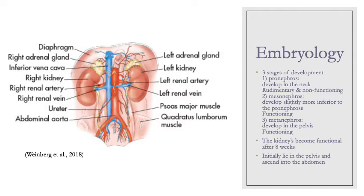After the pronephros develops in that early fourth week, at the end of the fourth week we get the development of the mesonephros, which develops slightly inferior to the pronephros. The mesonephros actually starts to create and excrete urine, functioning from about the end of week four until about week 10 when the adult kidneys take over. The pronephric duct now becomes the mesonephric duct, running from the mesonephros down to the cloaca. It will start to degenerate toward the end of the first trimester.